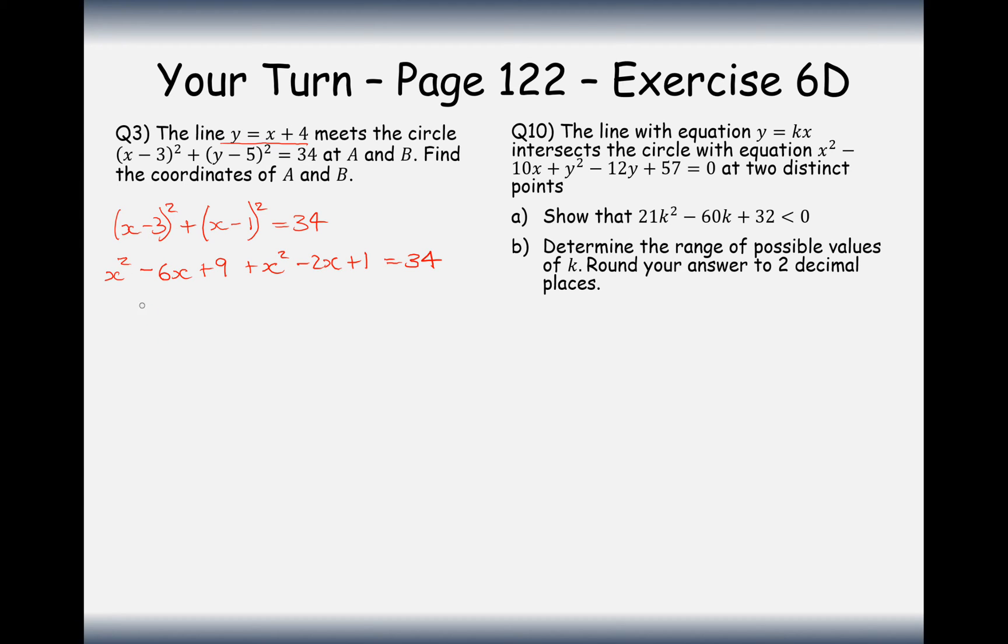Taking away 34 to the left-hand side and simplifying, we're going to get 2x squared minus 8x minus 24 equals 0, and half everything to simplify. Solve the quadratic equation by method of factorizing. We get x is 6 and x is minus 2.